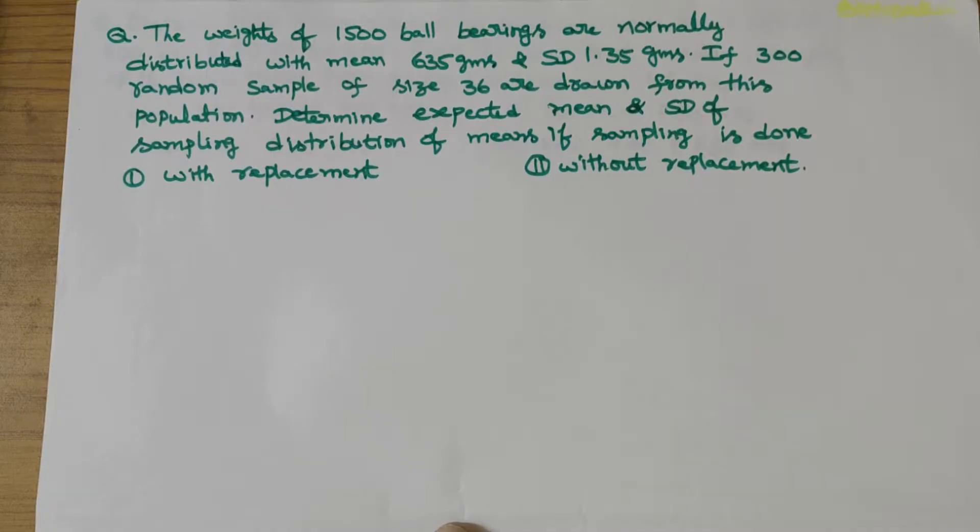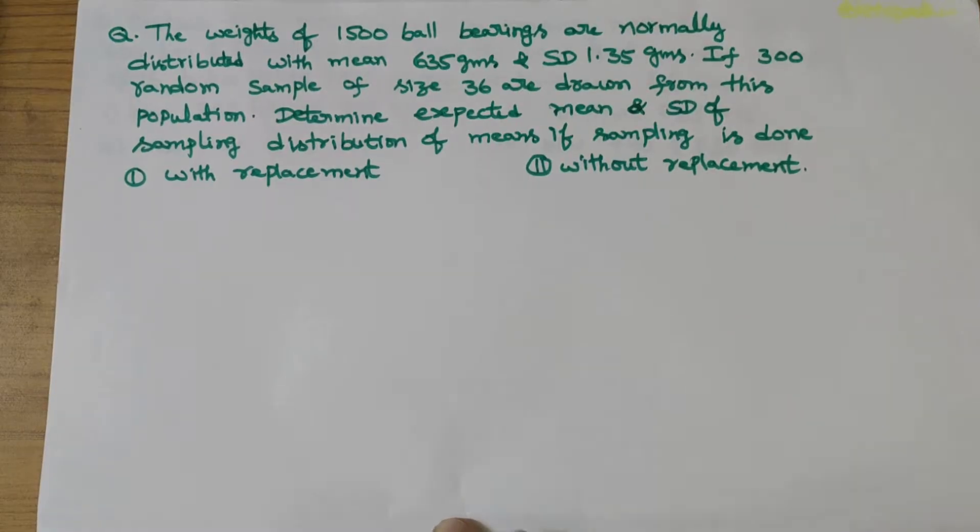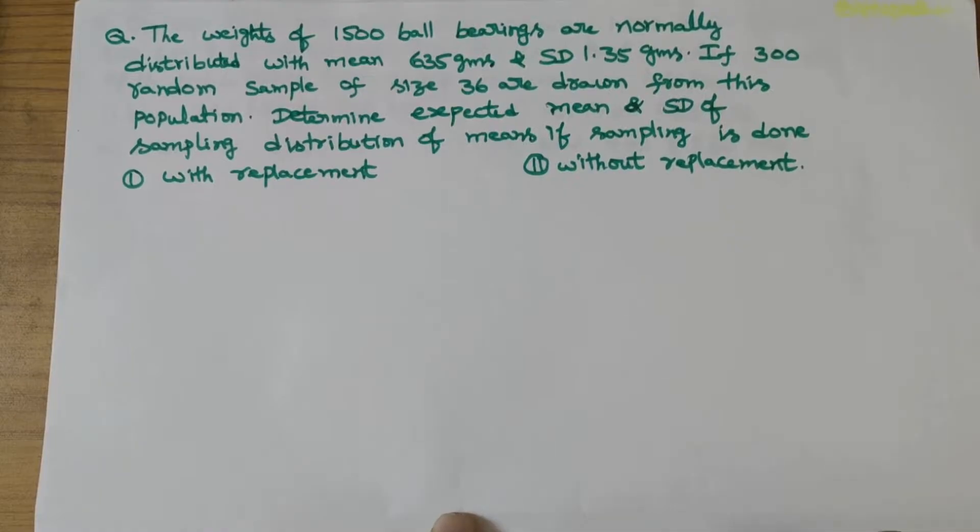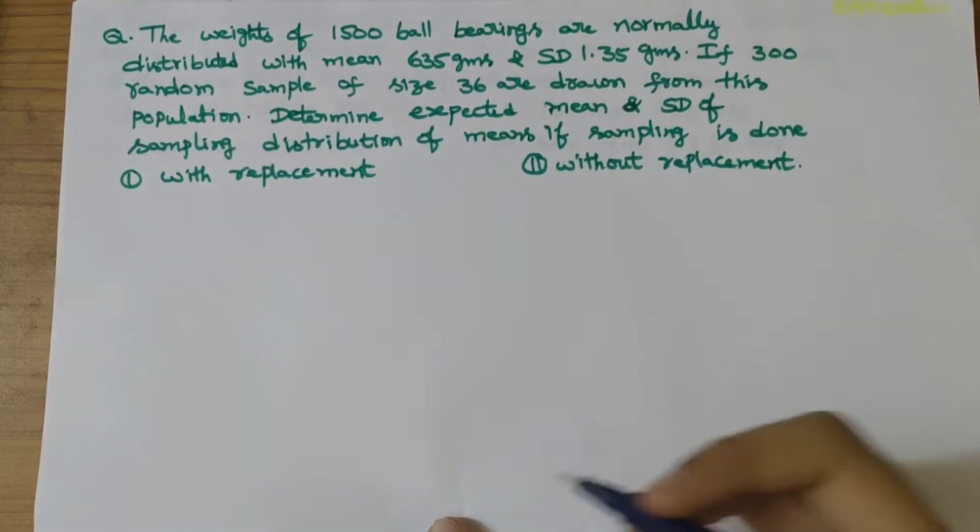In today's video, let's solve the given numerical. The problem states that the weight of 1500 ball bearings are normally distributed with mean of 635 grams and standard deviation of 1.35 grams.